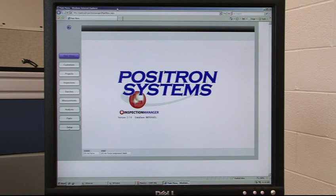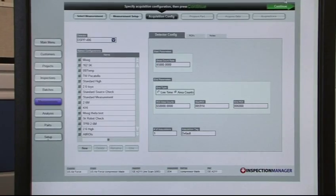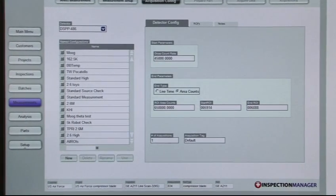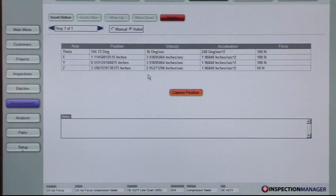Inspection Manager is the software developed by Positron Systems to perform and manage IPA measurements. Tests are arranged by customer and project. Inspections can be developed for a part, each with multiple measurements. Characteristics of each measurement can be assigned and tracked. Here, coordinates of the robotic part manipulator are stored.